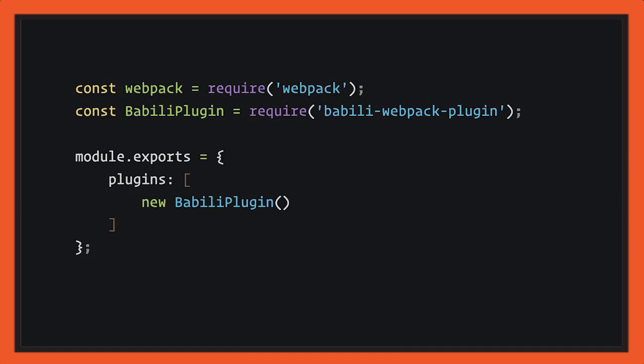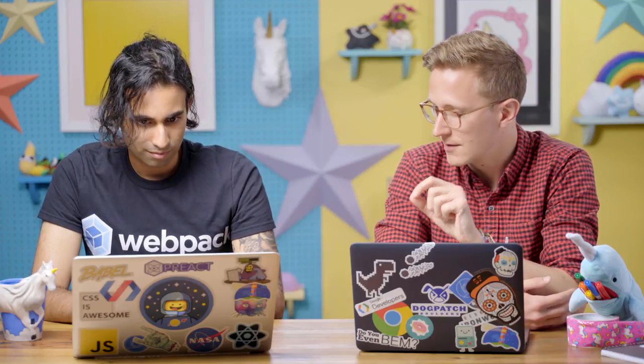Where you have to get a little bit creative is if you're shipping anything other than ES5 down to your users. A lot of folks are writing ES2015 today. If you're doing that and not transpiling down to ES5, make sure you're using something like Babel and the Babel Webpack plugin. It's going to minify, but it also understands ES2015, so there are certain optimizations it can do that are a little bit better than Uglify.js.